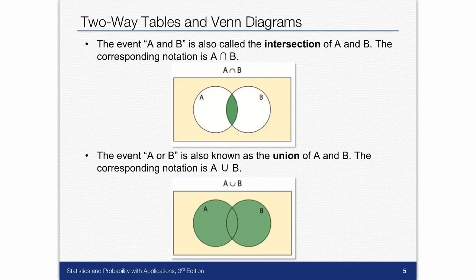The event A and B is called the intersection of A and B. The corresponding notation is this upside down horseshoe, and we read it as A intersection B, and it's the overlap of the two circles.